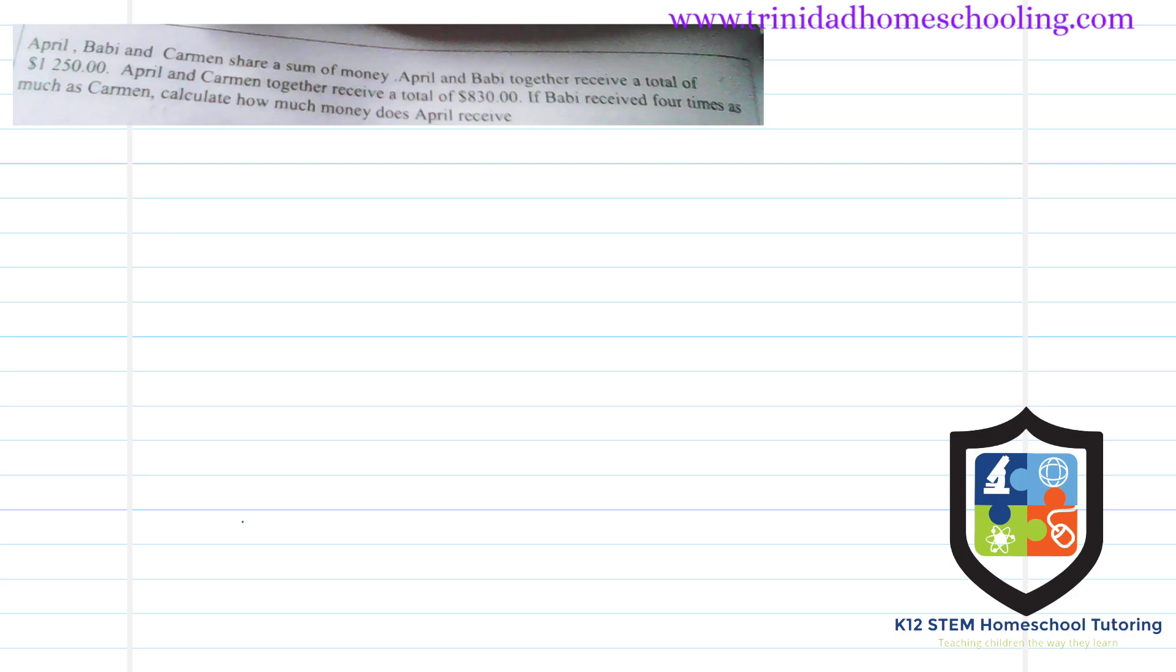First, let's take a look at what we have. We have April, Barbie, and Carmen. We're going to use A to represent April, B to represent Barbie, and C to represent Carmen, just so that we don't have to keep writing over their names.